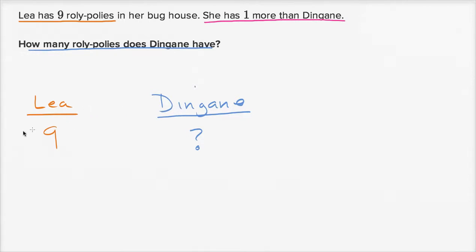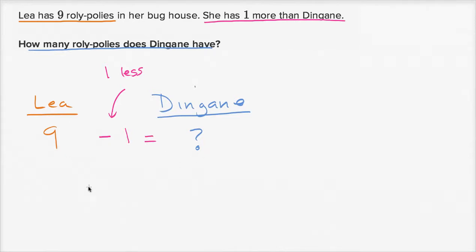So how do we write one less? Well, we could just subtract one. This right over here is one less — this is saying that Dingane has one less than Leah. So how much does Dingane have? He's going to have eight roly-polies.